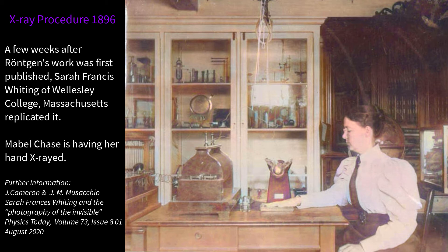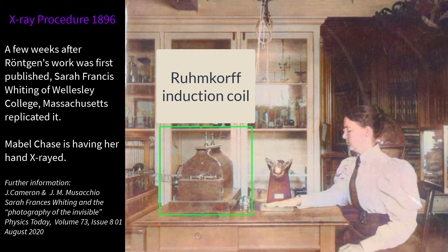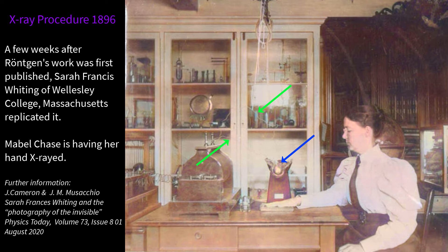A Ruhmkorff coil is generating high voltage pulses. Wires from the coil lead to the cathode and anode of the tube. When cathode rays hit the glass, X-rays fly off in all directions.